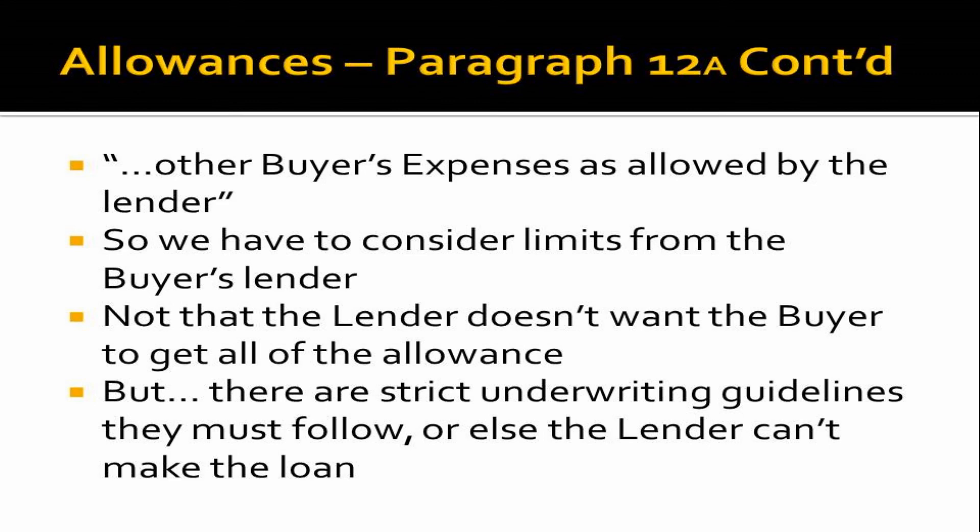It's not that the lender doesn't want the buyer to get the benefit — usually they have a good relationship. But there are strict underwriting guidelines the lender must follow, or they can't make the loan. If they don't follow the guidelines for that loan type, they can't resell the loan, their capital is tied up, and that's a bad day for a lender. The lifeblood of a lender is to resell the loan, get the money back, and loan it out again. So no matter what paragraph 12 says, they must follow those rules.